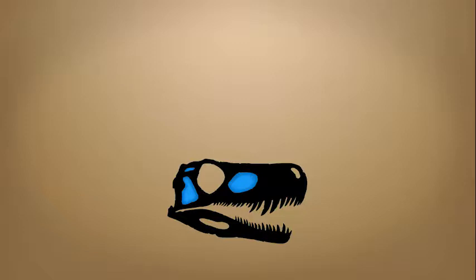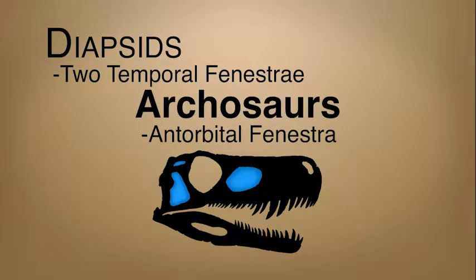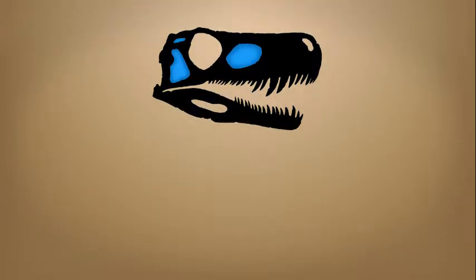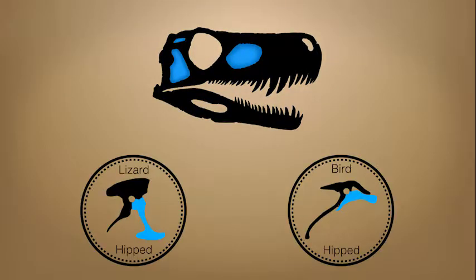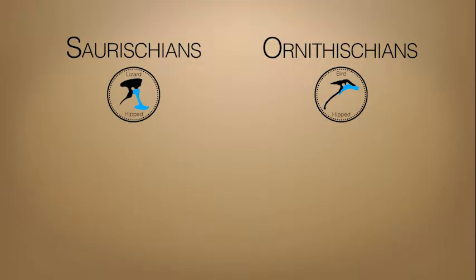As we have learned in previous episodes, dinosaurs belong to a group of diapsids called archosaurs. Dinosaurs are divided into two groups based on their hip structures: the saurischians and the ornithischians. The saurischian, or lizard-hipped dinosaurs, are divided into two groups: the sauropods and the theropods.